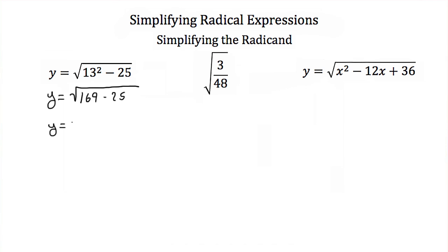Now if you take 169 and you subtract 25 from it, you'll get the square root of 144. 144 is a perfect square of 12, so our y then would be equal to 12. By simplifying what's underneath the square root, we were eventually able to take the square root of a number that was easy to take the square root of.